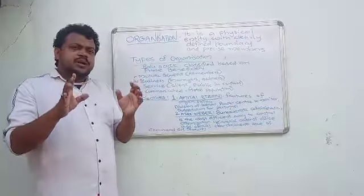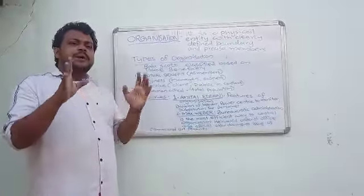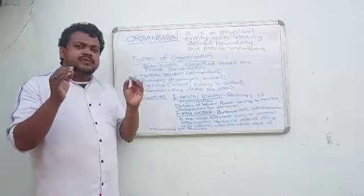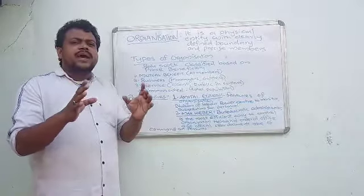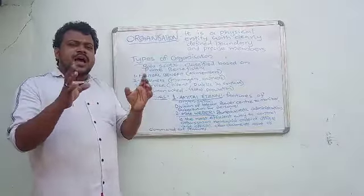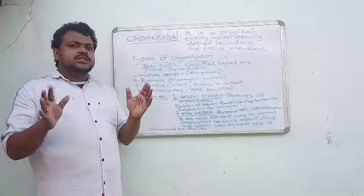So, organization. First one, there will be a physical structure. Second one, there will be a boundary. And third one, there will be affiliated members. Not all can participate in an organization because there will be selected and recognized members. Now let us discuss what are the types of organization.